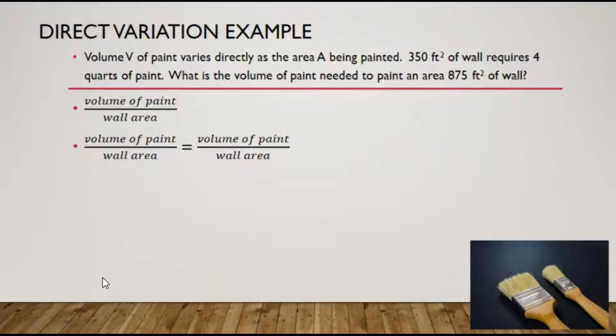Using the numbers that are given, we have the following. 350 feet squared requires 4 quarts of paint, and we express that ratio here, is equal to how much paint for an area of 875.